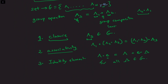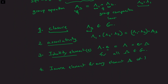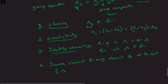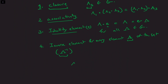Such an element e which satisfies this relationship for all lambda belonging to G is called the identity element. The fourth property is that there is an inverse element for every element lambda of the set. This inverse element, denoted lambda inverse, is a different member of the set, and the group satisfies the property that lambda composed with lambda inverse equals e, and likewise for the reverse composition.